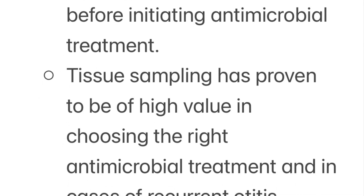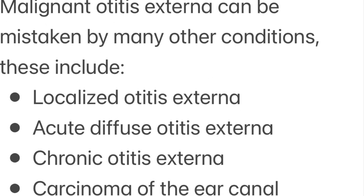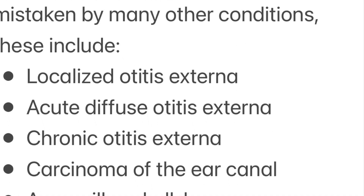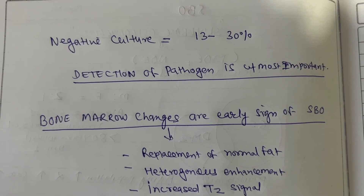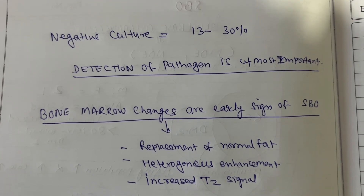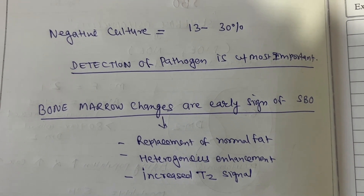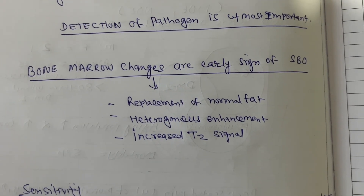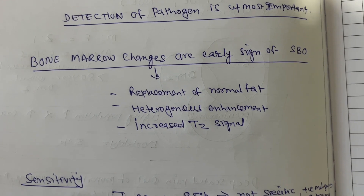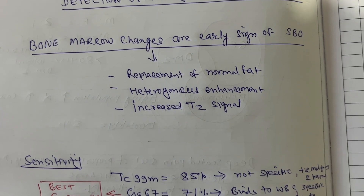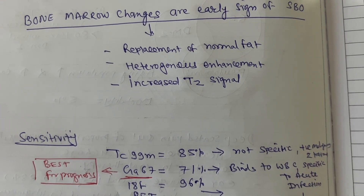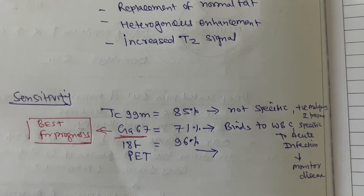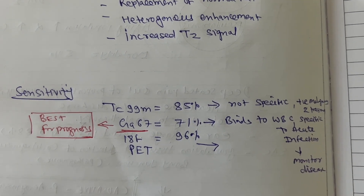Pseudomonas aeruginosa accounts for about 80% of cases. Tissue sampling is very important to diagnose and detect the pathogen. Bone marrow changes are an early sign of skull base osteomyelitis, such as replacement of normal fat, heterogeneous enhancement, and increased T2 signal on imaging.